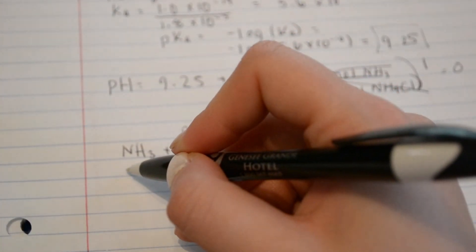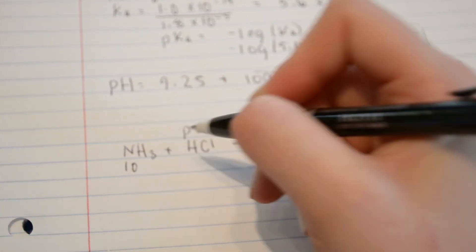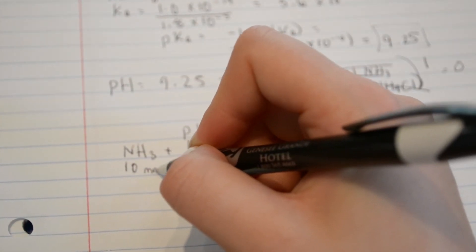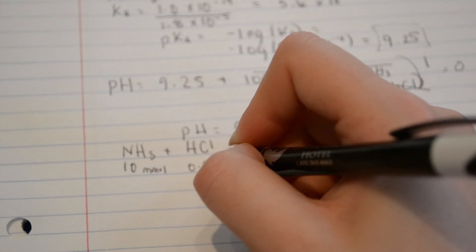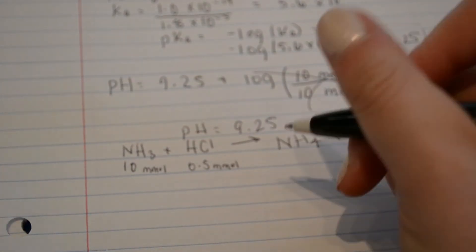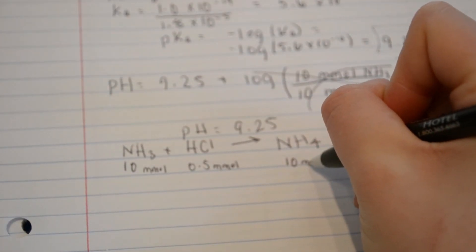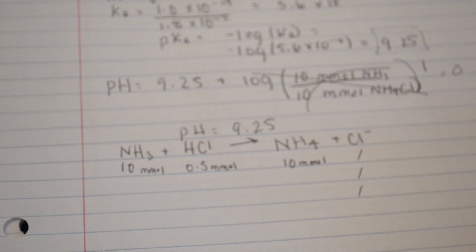So we'll start with 10 millimoles of NH3. And we're starting with 0.5 millimoles, which we calculated at the beginning. And we also have 10 millimoles of NH4 to start with. We can ignore the Cl minus.